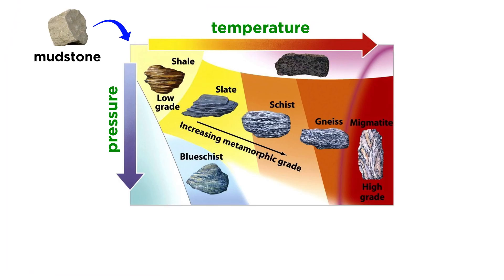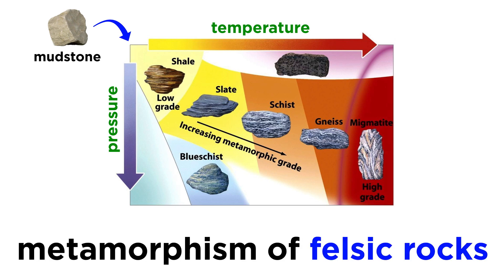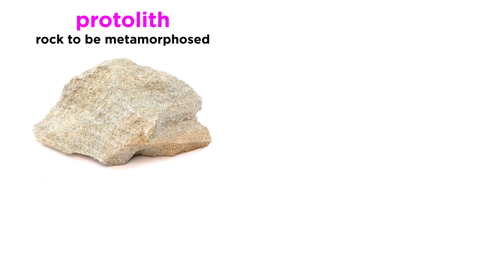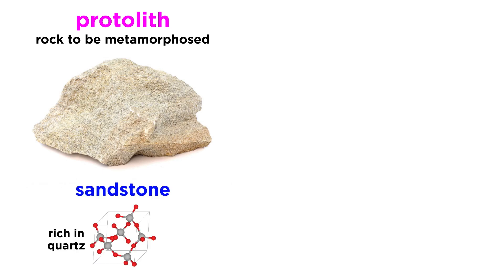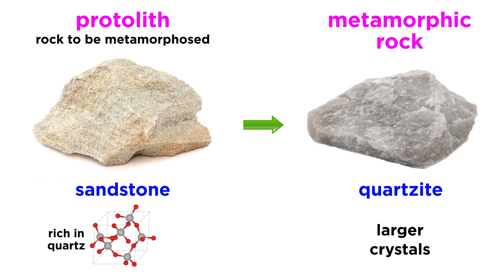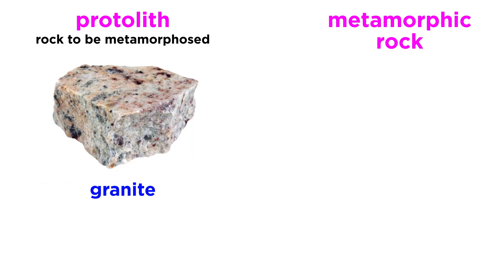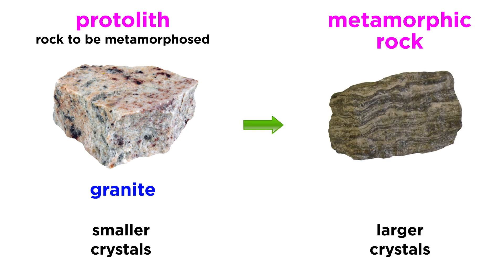In addition to examining the progressive metamorphism of mafic rocks, we have also looked at metamorphic intensity using a mudstone as an example. Let's talk a bit more about the metamorphism of felsic rocks. The parent rock, or rock that is to be metamorphosed, is called the protolith. Starting with sandstone as our protolith: since sandstones tend to be very rich in quartz, when they are metamorphosed the quartz just recrystallizes into larger crystals, and this type of rock is called quartzite. The metamorphism of felsic igneous rocks like granite is also pretty straightforward, and most of what will happen is recrystallization of the original minerals into larger crystals.